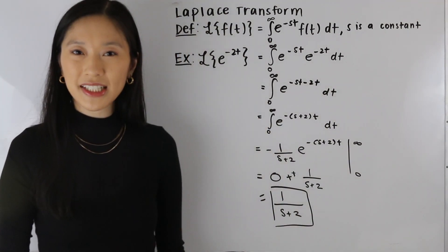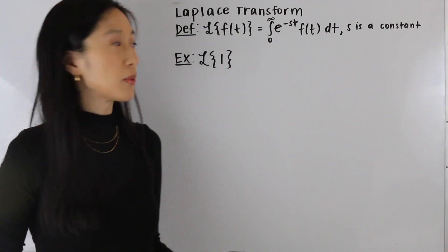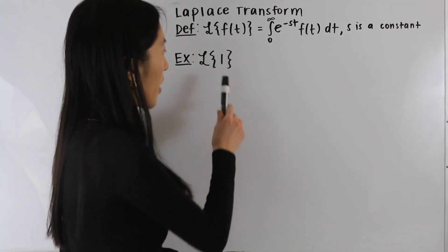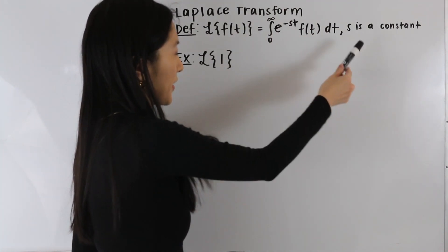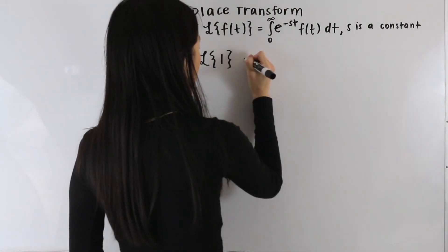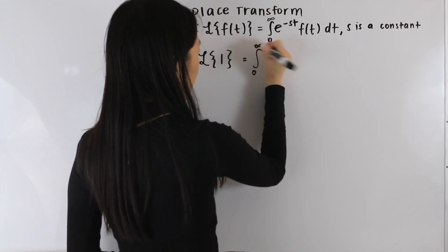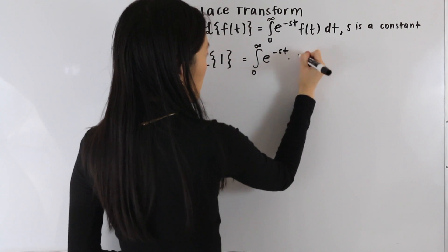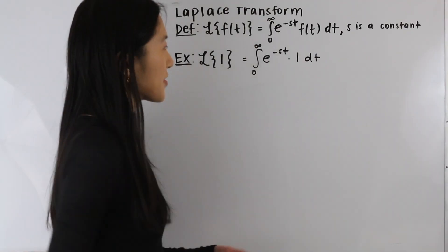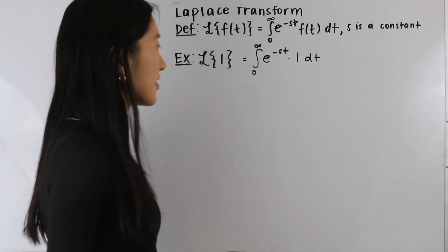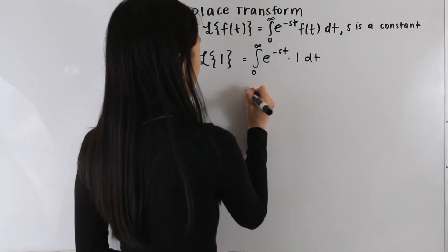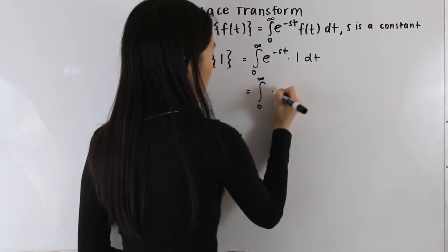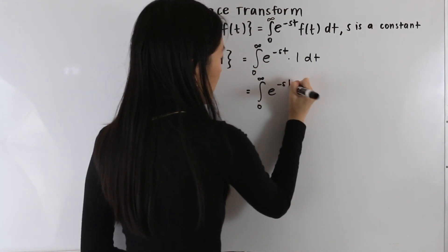Let's take a look at one more example. In this next example, we have the Laplace transform of the function 1. Let's plug in 1 for f of t in the integral, so we have the integral from zero to infinity of e to the negative st times 1 dt. Since e to the negative st times 1 is just e to the negative st, we can rewrite this as the integral from zero to infinity of e to the negative st dt.